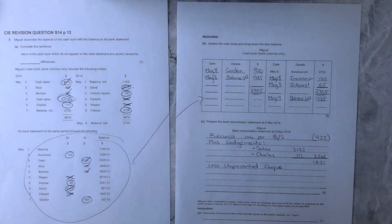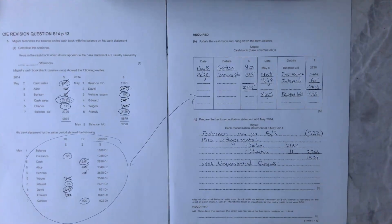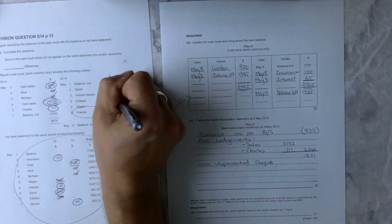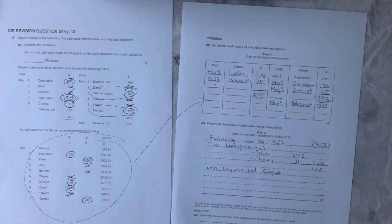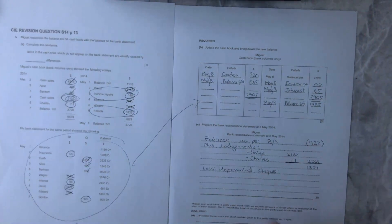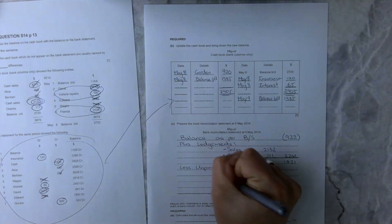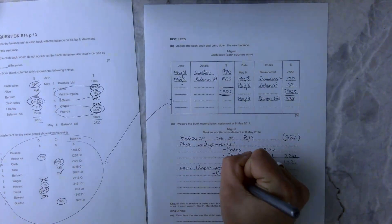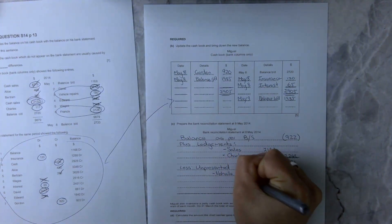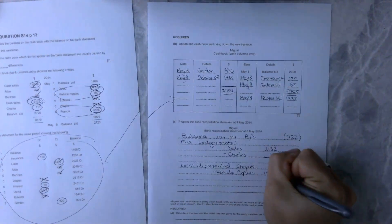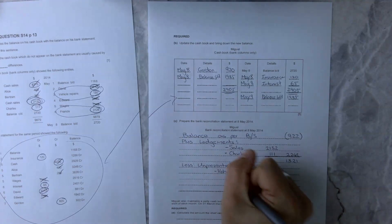Where do we get those from? They kind of come from our credit side and there's two there, there's the Francis and the vehicle repairs that we need to add in here. So normally do them in chronological order because we're accountants, we like that sort of stuff. Vehicle repairs there, and that is 180 dollars, and our Francis check is at 3126.